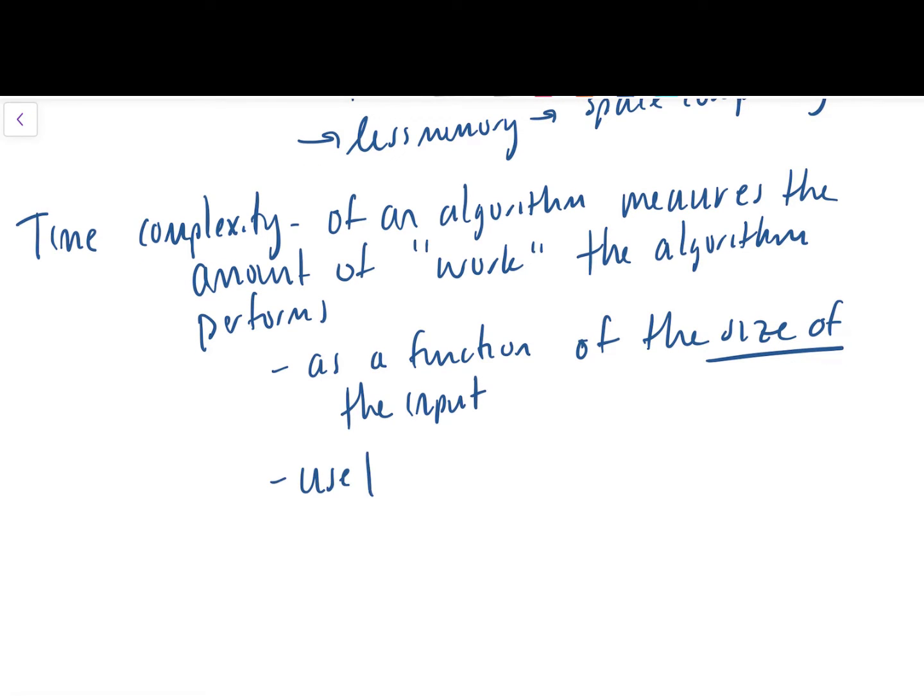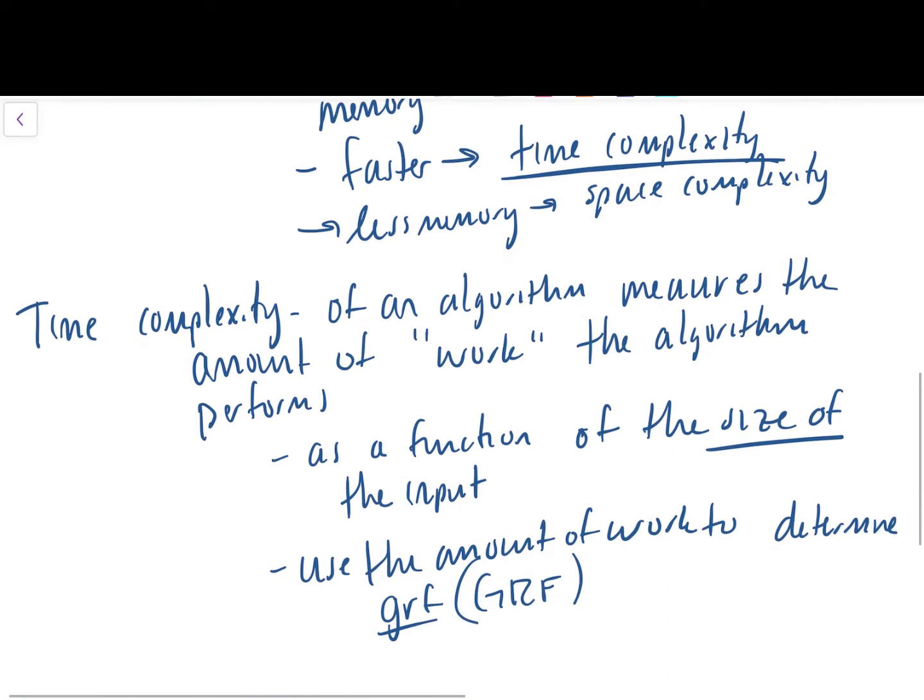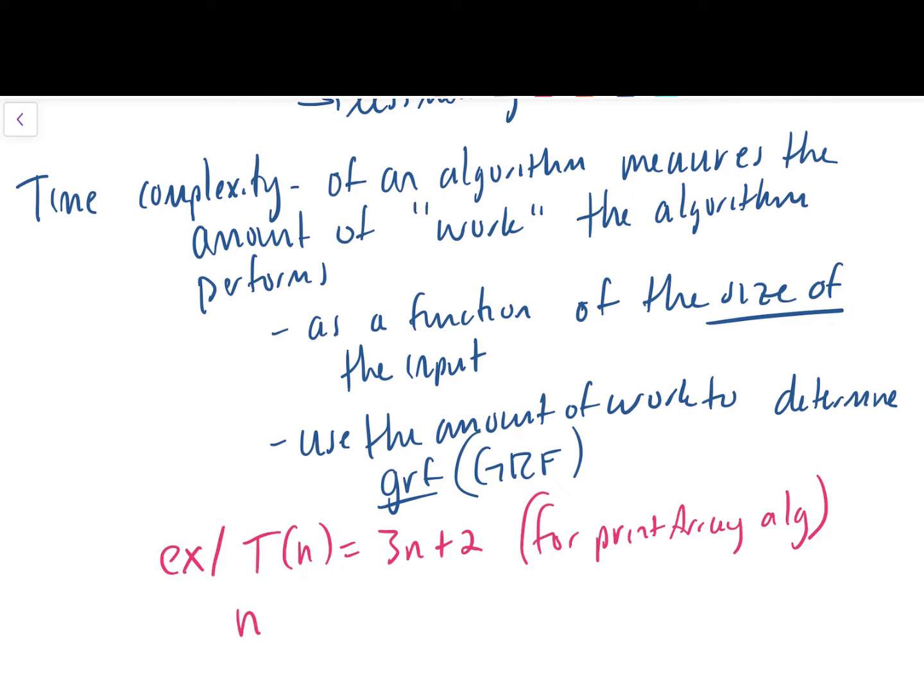So let's write a nice definition for time complexity that you can refer to later. The time complexity of an algorithm measures the amount of work—and I'm going to put work in quotes here because we already have an idea of work from our operation counting videos and our growth rate function—the amount of work the algorithm performs as a function of the size of the input.